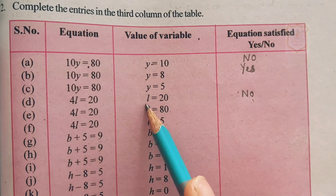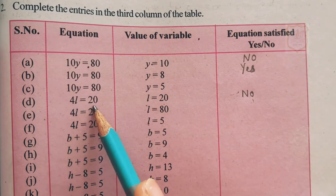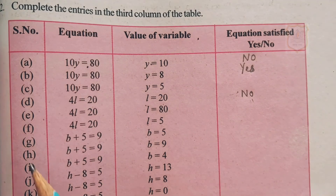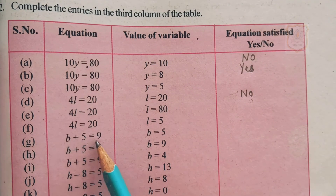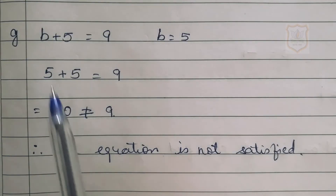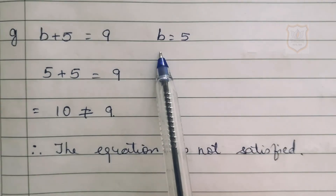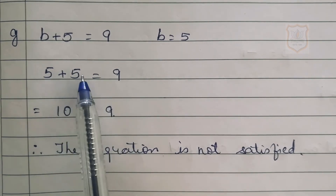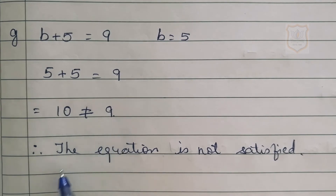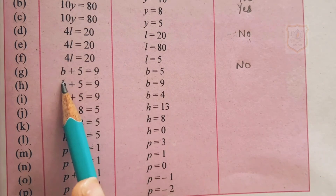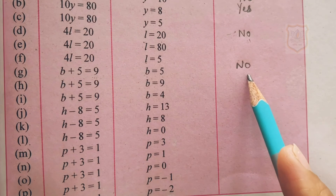Parts E and F of question number 2 you have to do by yourself. Part G: B plus 5 equals 9, where the value of B is 5. We substitute 5 in place of B, so 5 plus 5 equals 9. But 5 plus 5 is 10, and 10 is not equal to 9. Therefore, the equation is not satisfied. If the value of B is 5, then B plus 5 does not equal 9 — answer is no.